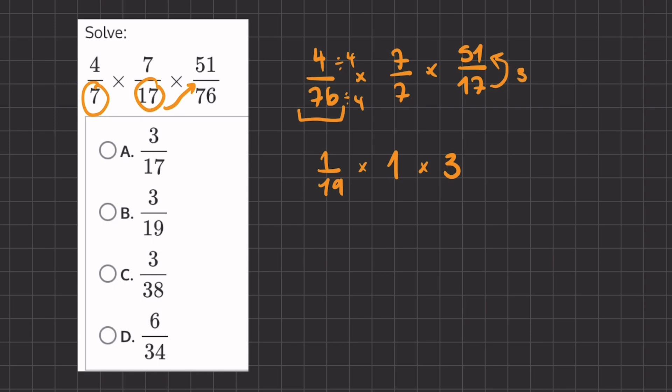And so now we are left with 1 over 19 times 3 over 1. And so now if we multiply straight across, we have 3 over 19, and this will be our final answer.